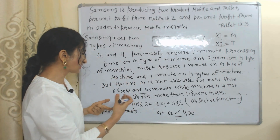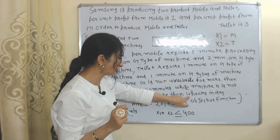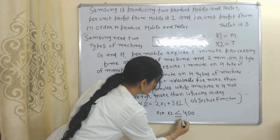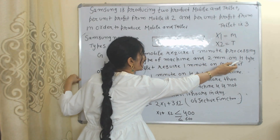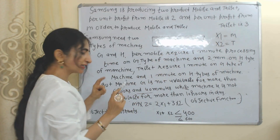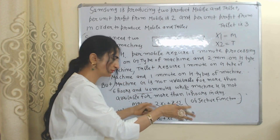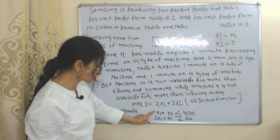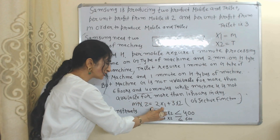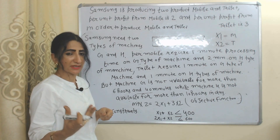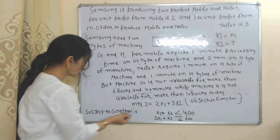Now we will formulate the limitation of machine H. Machine H is not available for more than 10 hours. Converting 10 hours into minutes gives 600 minutes. Mobile needs two minutes processing time on machine H and tablet needs one minute processing time on machine H. So we write: 2x1 + x2 ≤ 600. These are our two constraints — we have to maximize our objective within these limitations.